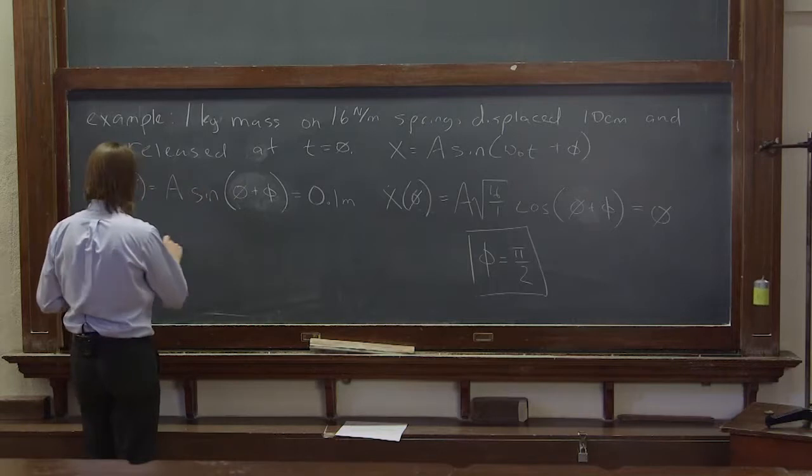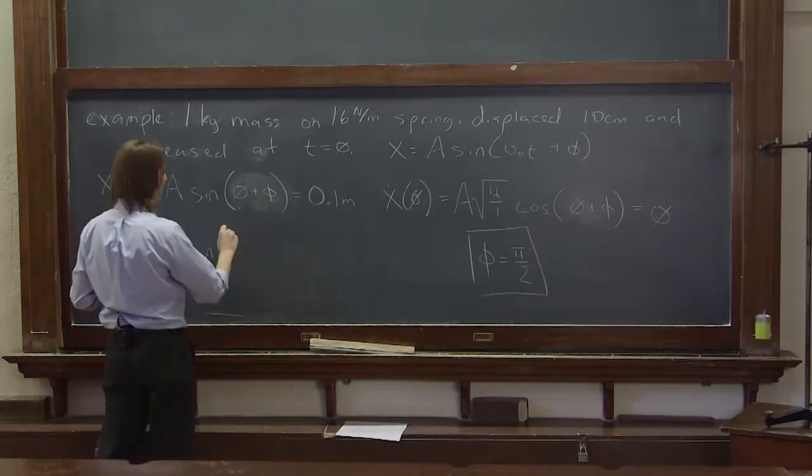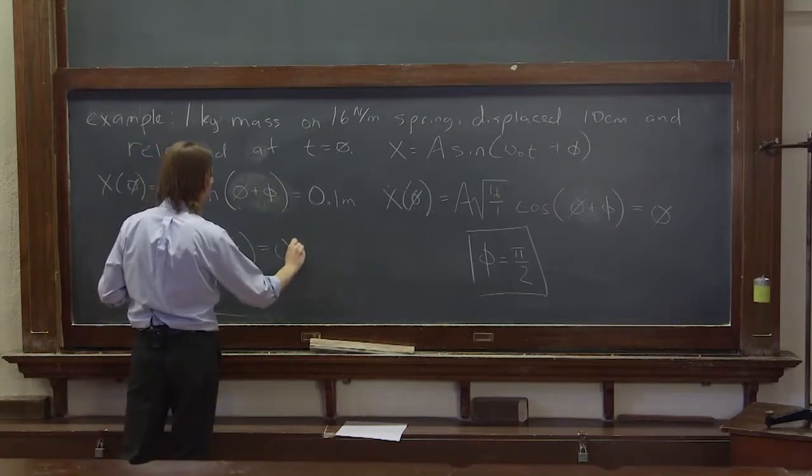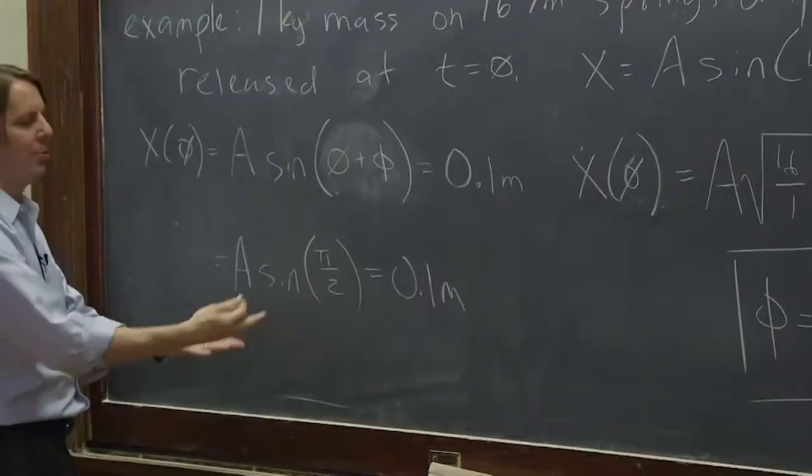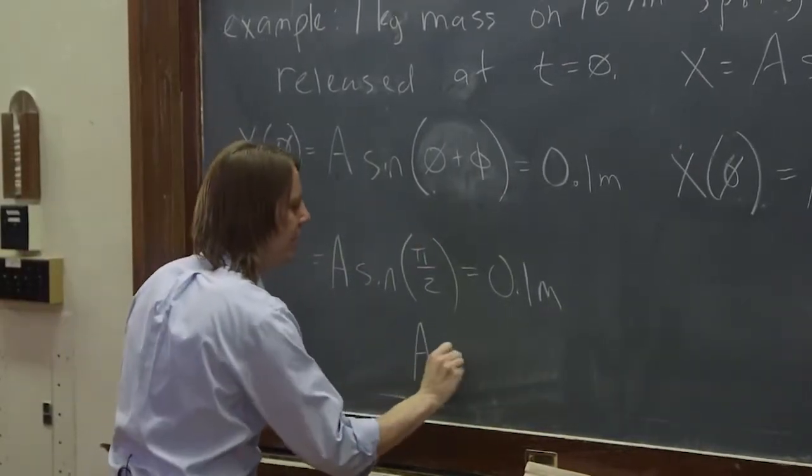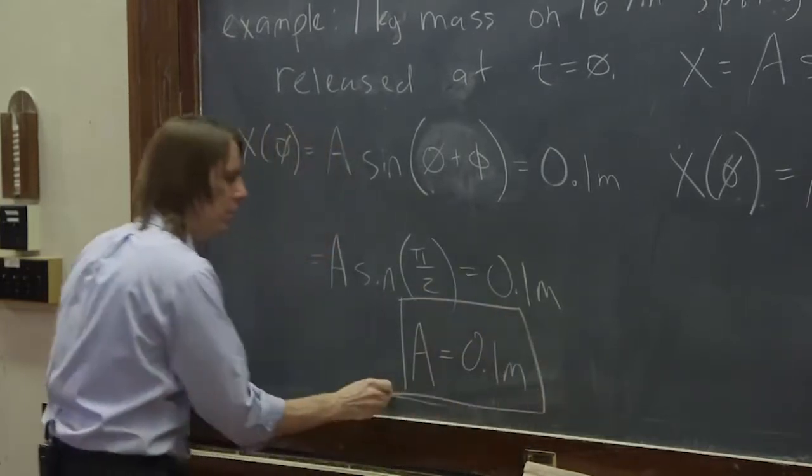Then we come back over here and we say A sine, and if phi is pi over two, we put pi over two there, and that's equal to 0.1 meters. Well, the sine of pi over two is one. So if that's one, then we have our answer that the amplitude is 0.1 meters.